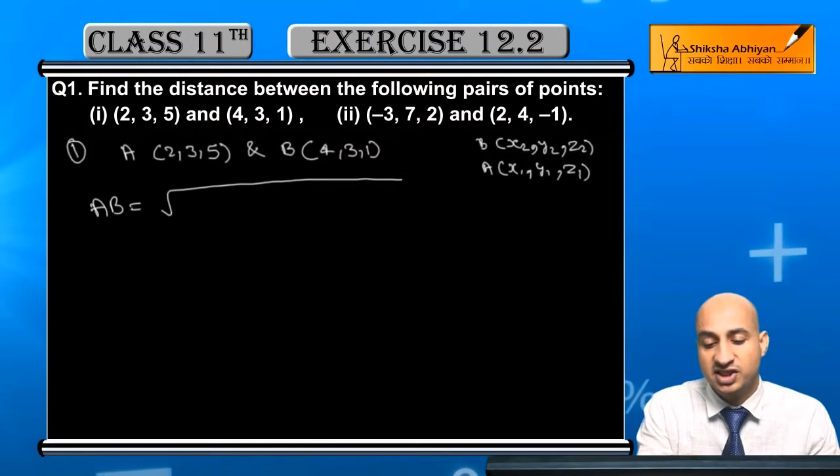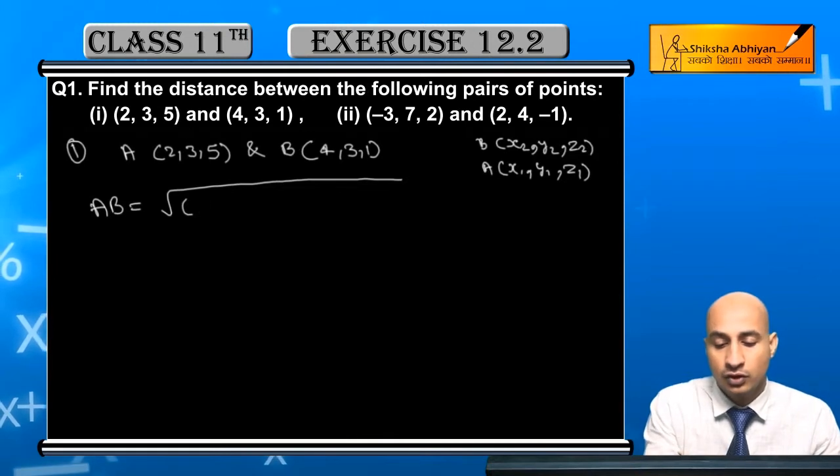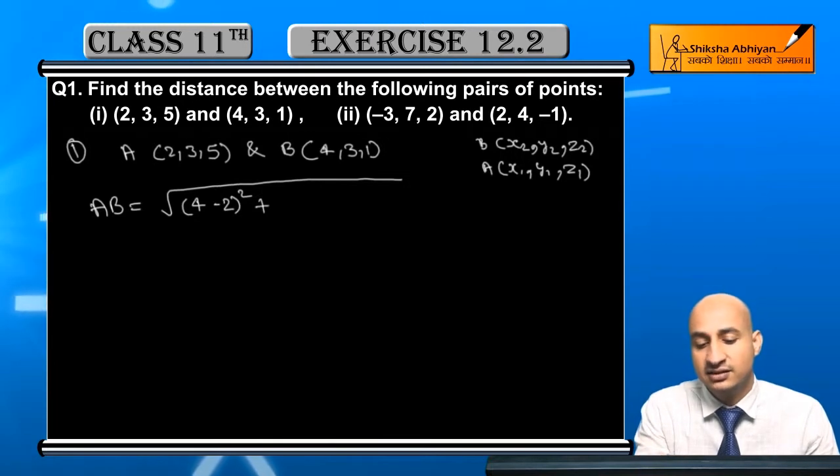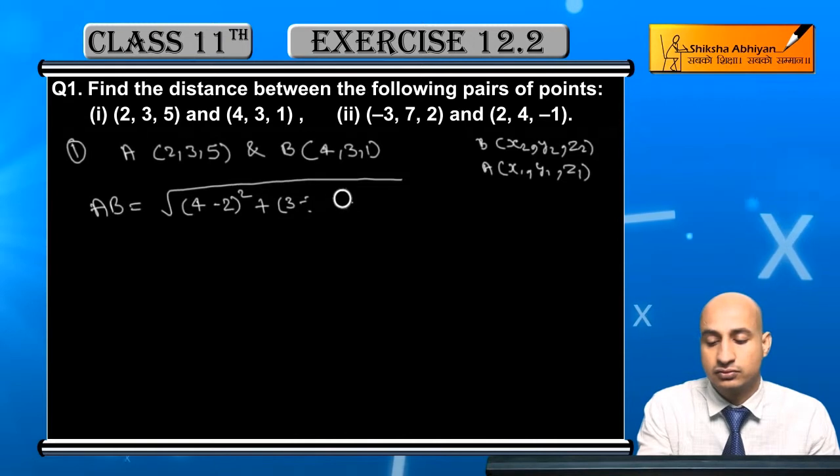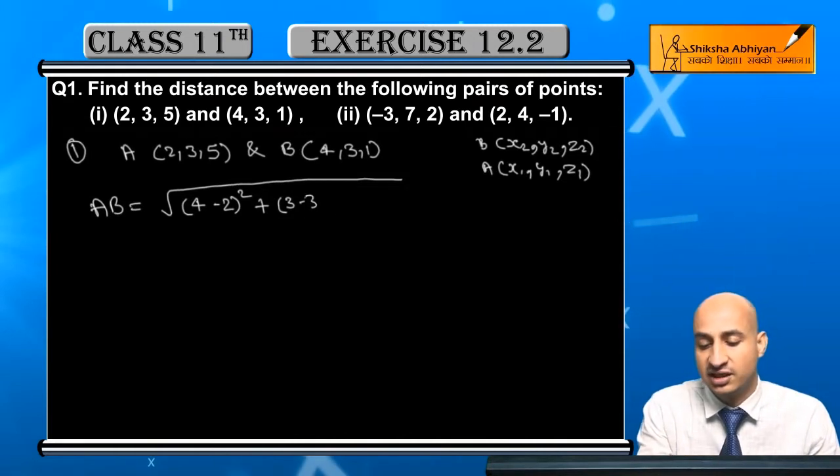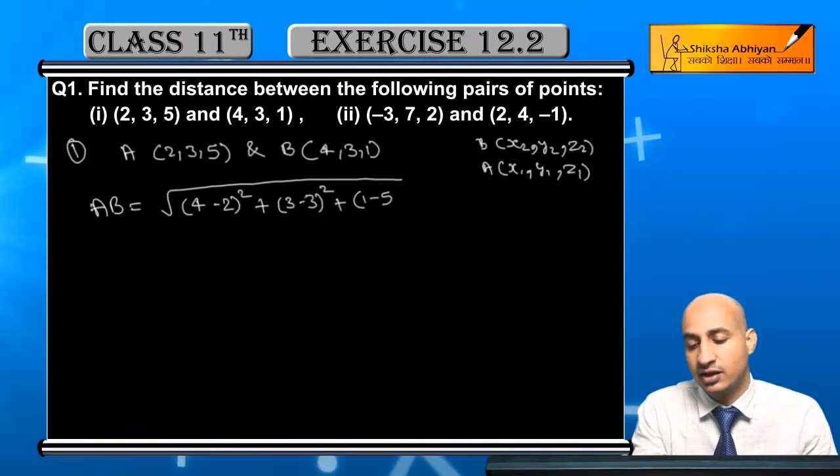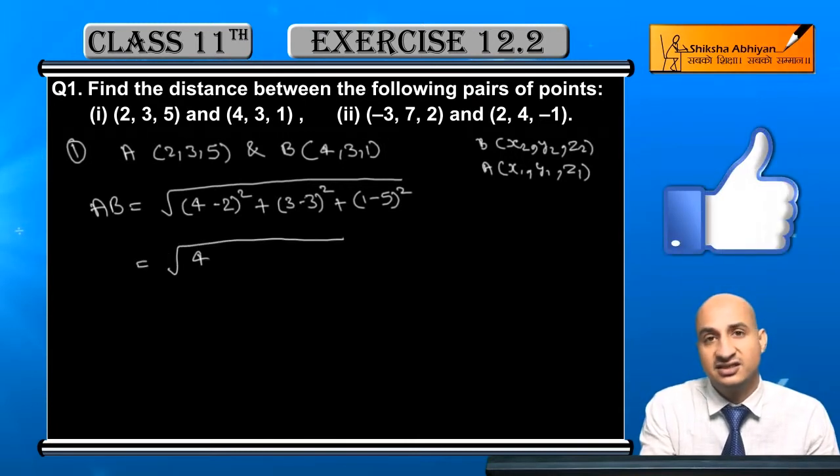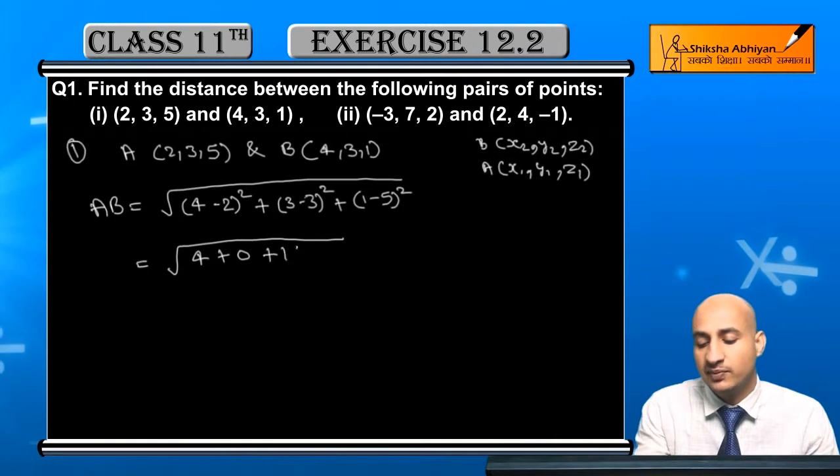Now, x2 minus x1, x2 minus x1 is 4 minus 2 ka whole square, this is 4 minus 2 ka whole square, then plus y2 minus y1 is 3 minus 3 ka whole square. Now, z2 minus z1 is 1 minus 5 ka square. Now 4 minus 2 ka square is 2, 2 ka square is 4. Now 3 minus 3 is 0, 0 ka square is 0. 1 minus 5 is minus 4, and minus 4 ka square is 16. So, you have here.